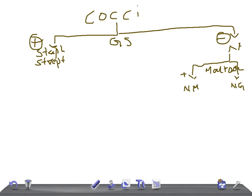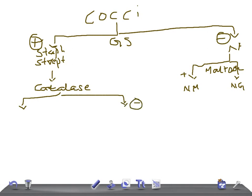Now let's classify gram positive cocci further. The next test is the catalase test. If catalase is positive, it's the Staphylococcus family. If catalase is negative, it's the Streptococcus species. So the catalase test is what differentiates Staph from Strept.